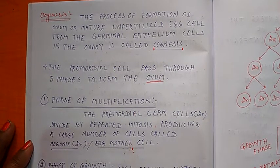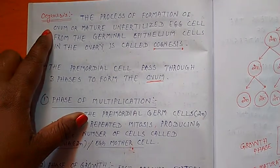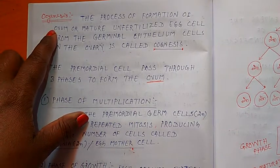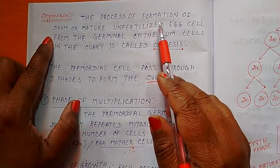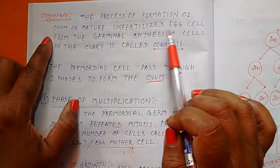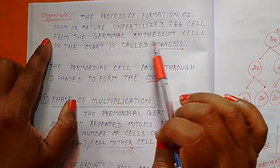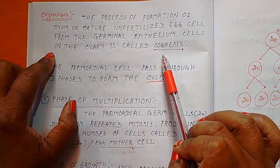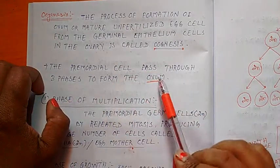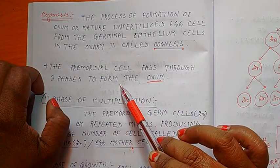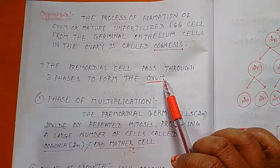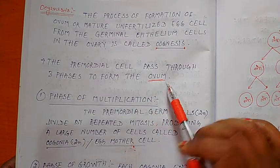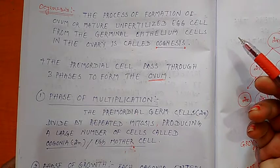Today my topic is the process of oogenesis, which occurs exclusively in female gonads, that is the ovum. The process of formation of ovum or mature unfertilized egg from the germinal epithelial cells in the primary ovary is called oogenesis. The primordial germ cell passes through three phases to form ovum. Oogenesis occurs exclusively in females, while spermatogenesis occurs in males.